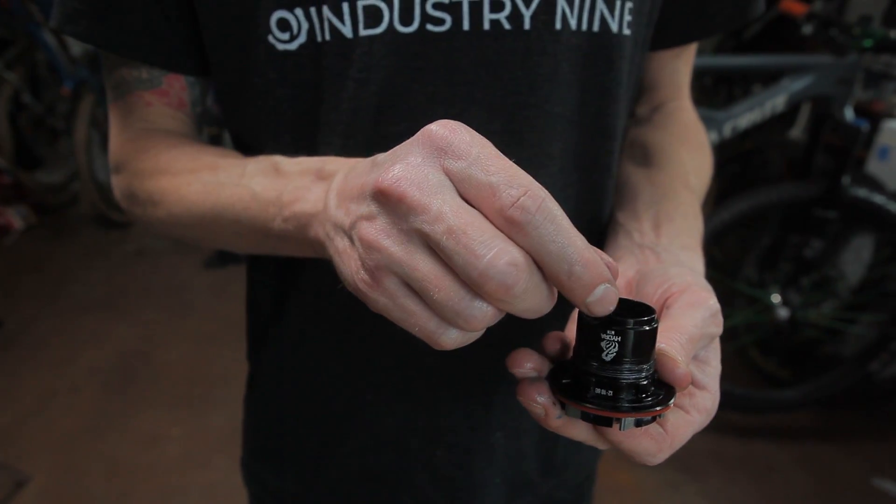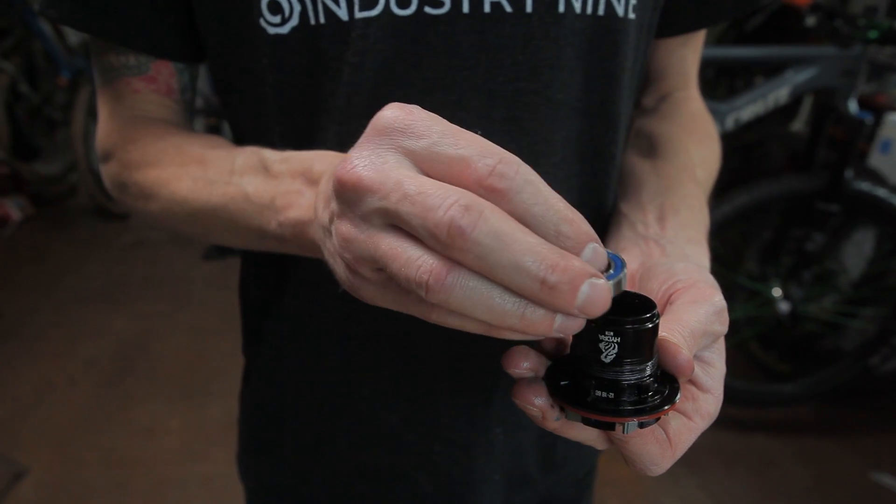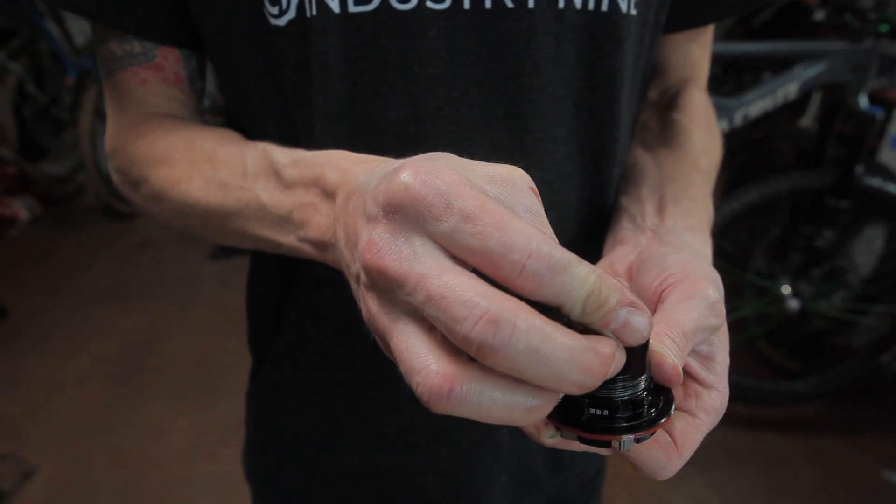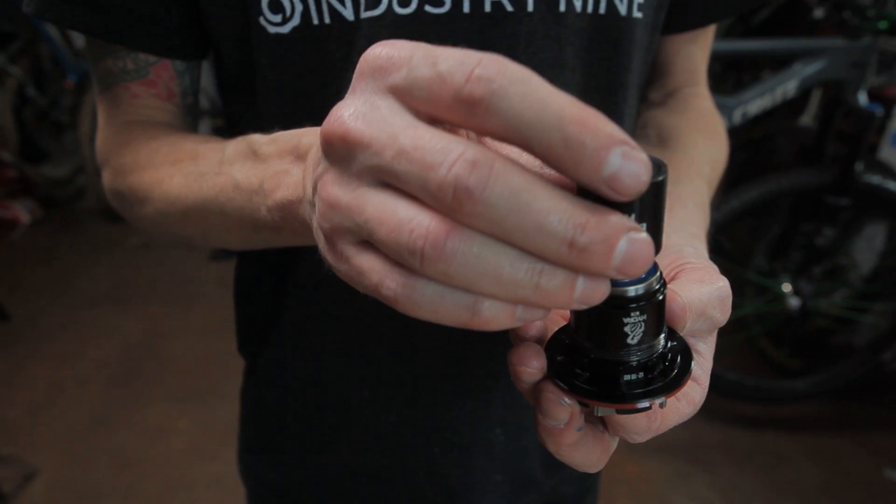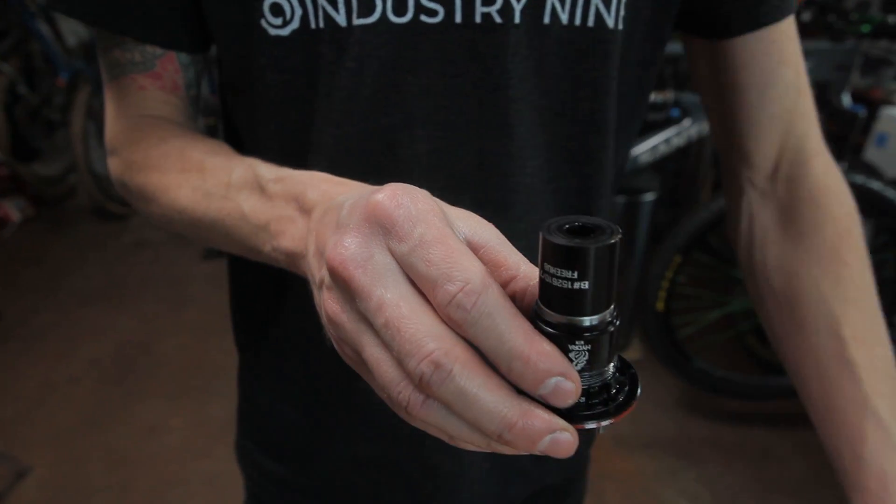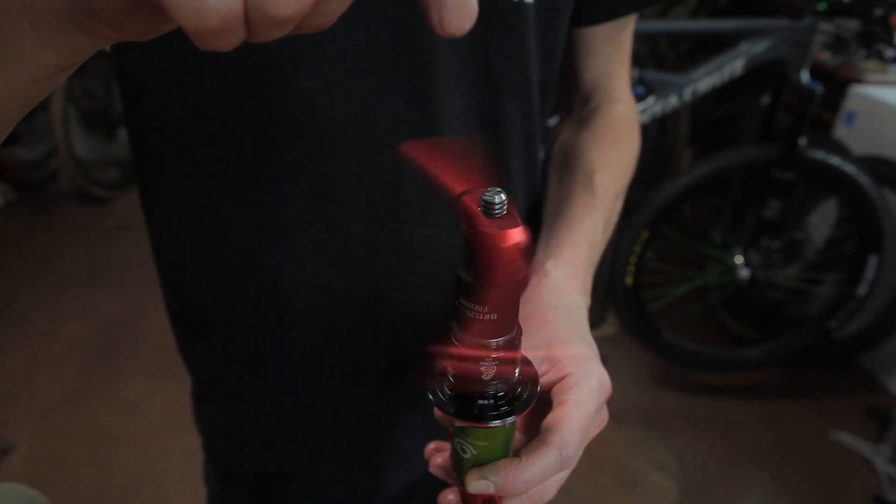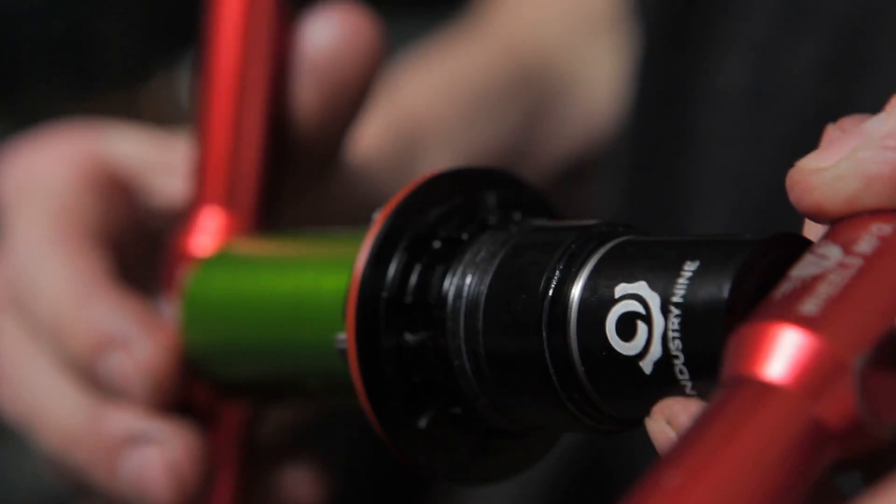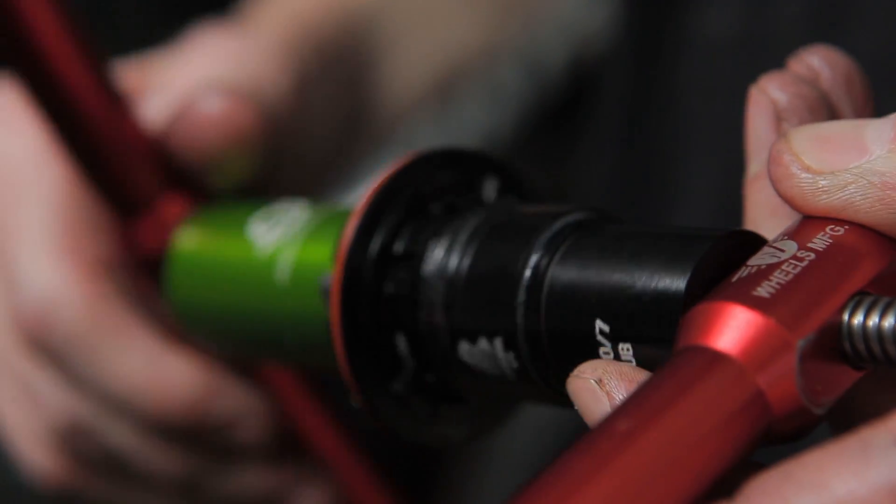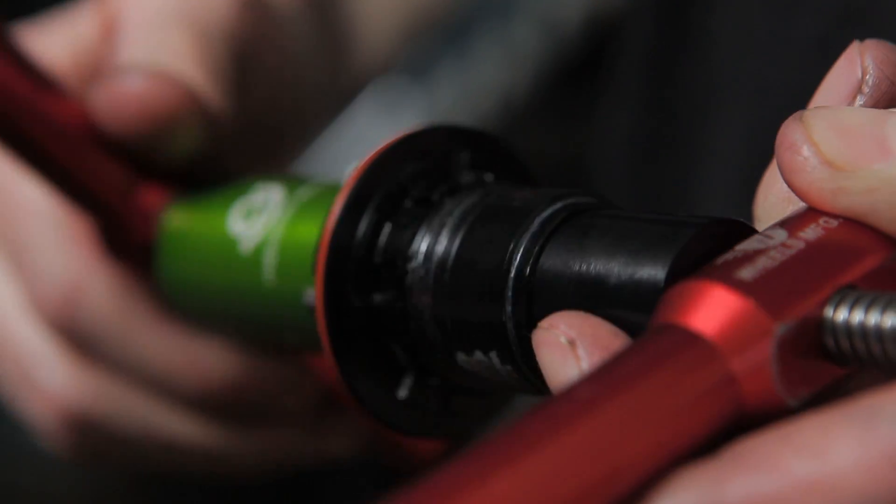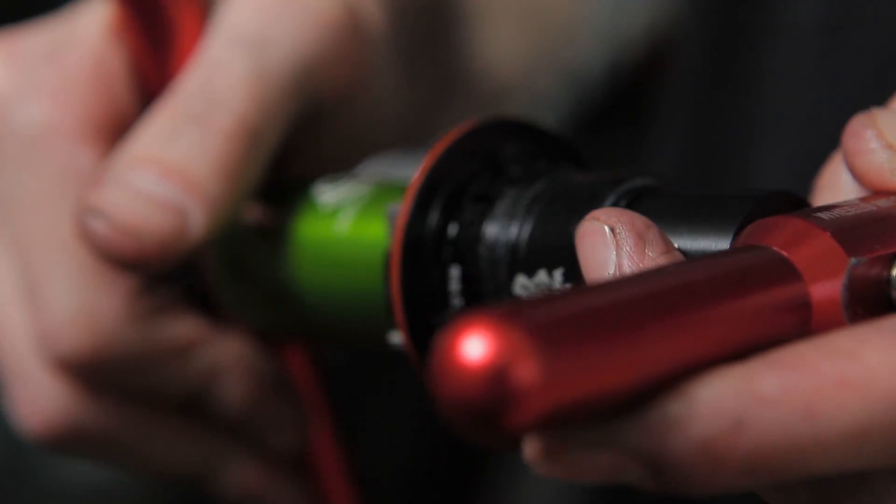With your double-row bearing in place, you can insert the spacer and stage your outboard bearing. You'll use the same press adapter for the outboard bearing. Use the flat side of the 15-307 adapter against the double-row bearing on the backside of the freehub body. With the adapters in place, begin pressing the outboard bearing. Be sure to press the bearing fully into its seat.